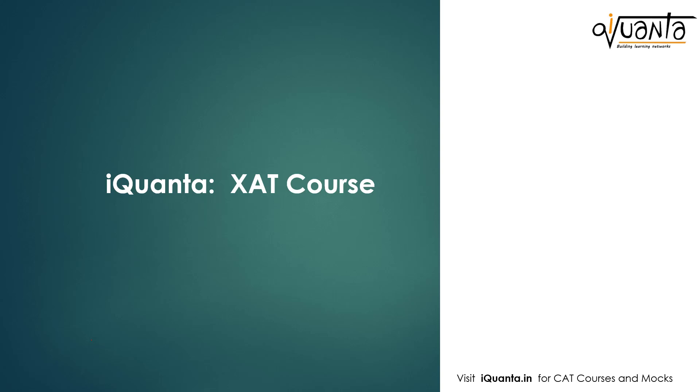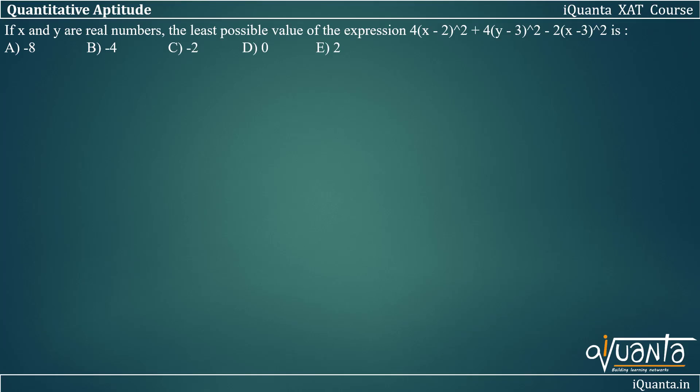Hello everyone, let us again solve a question on Maxima Minima from past XAT papers. The question is: if x and y are real numbers, the least possible value of the expression 4(x-2)² + 4(y-3)² - 2(x-3)² is?